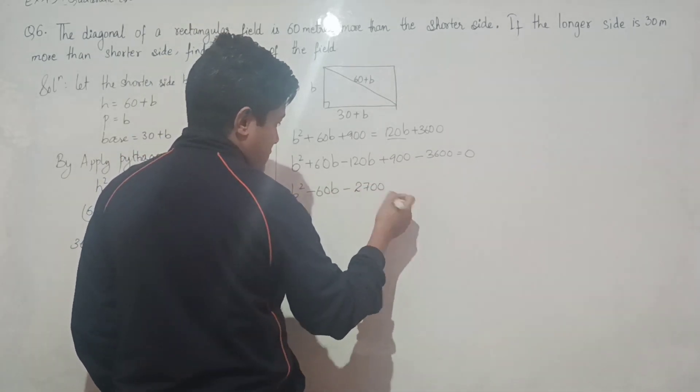We cannot have negative 30 as the side of a rectangle, so 90 is the answer. The breadth is 90 meters. The diagonal is 60 plus b equals 60 plus 90, which is 150 meters. The longer side, which is the length, is 30 plus b equals 30 plus 90, which is 120 meters. So these are the sides of the given rectangular field.